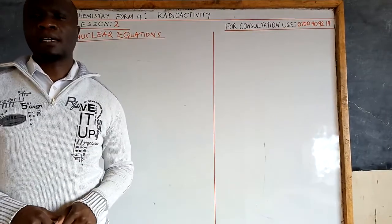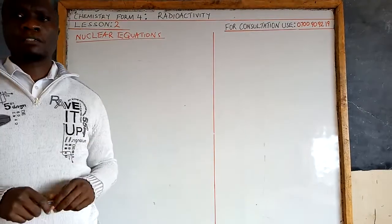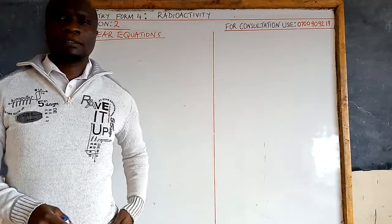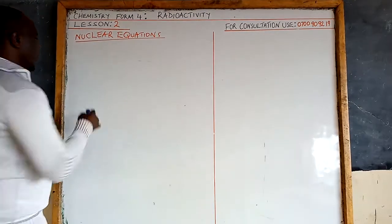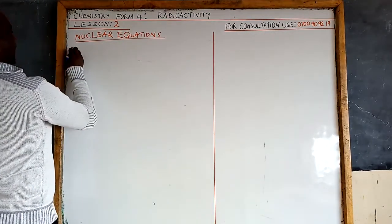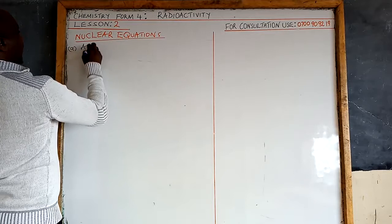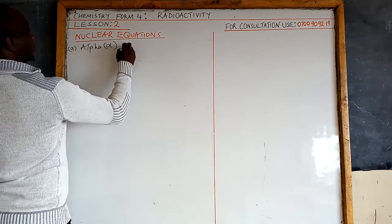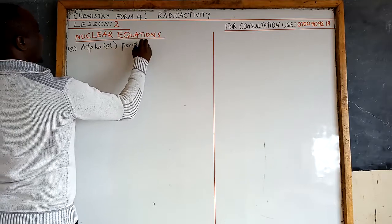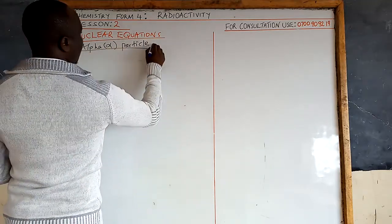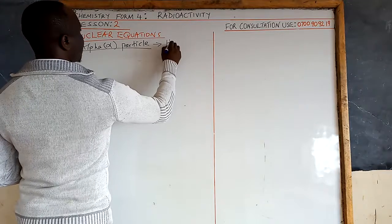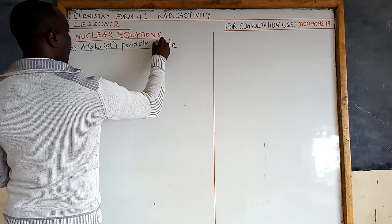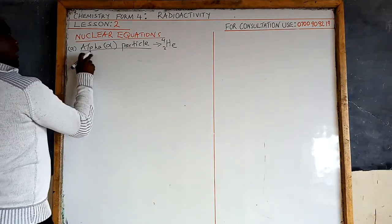In nuclear equations, no new elements are formed — unlike chemical equations. When balancing, we concentrate on balancing the mass number and the atomic number. Let's take examples of nuclear equations involving alpha particles, where the alpha particle is represented as a helium particle He-4-2.